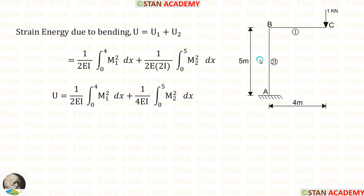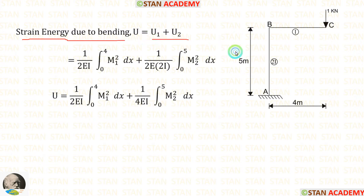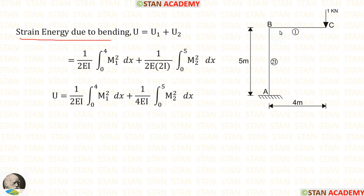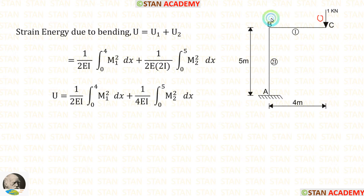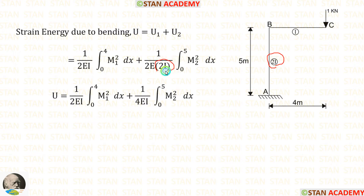In this frame, we are having two different parts: AB and BC. So we have to calculate the strain energy due to bending in two parts. For calculating strain energy, we have to make two sections — one section in BC and one section in AB. The limits for CB will be 0 to 4, and the limits for BA will be 0 to 5. The moment of inertia for AB is equal to 2I, so instead of I we apply 2I, giving us 2 into 2 equals 4.